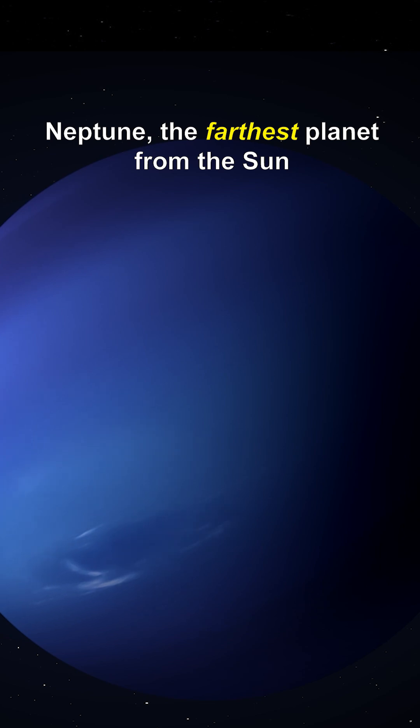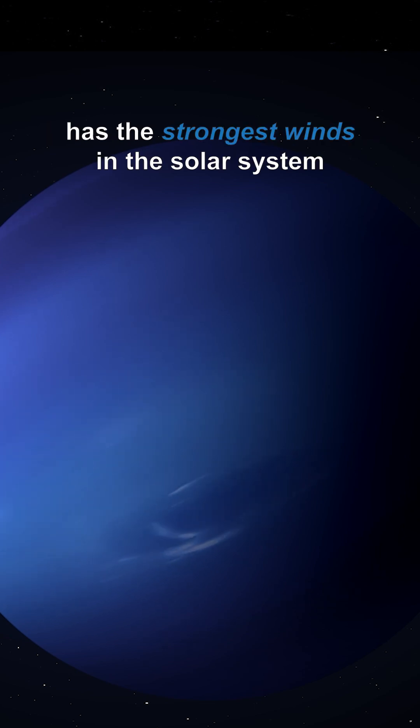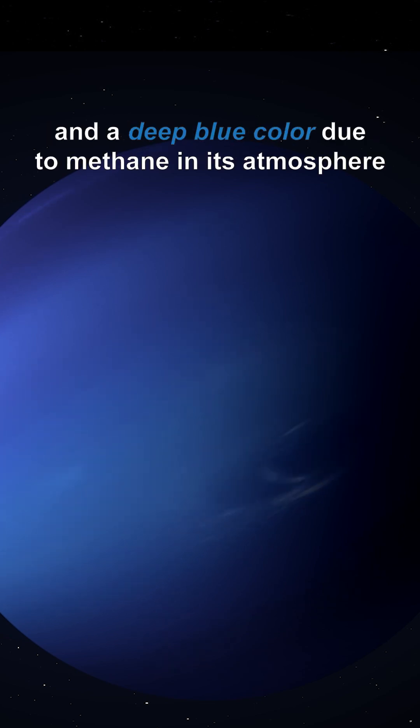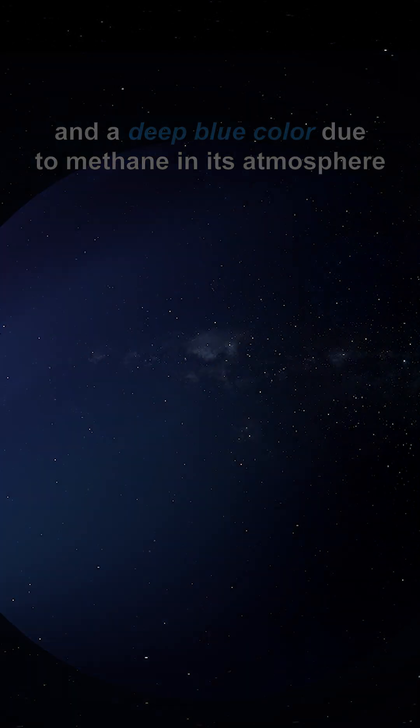Neptune, the farthest planet from the Sun, has the strongest winds in the solar system and a deep blue color due to methane in its atmosphere.